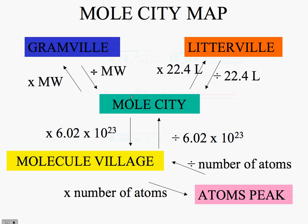To go from Gramsville to Mole City, we simply divide by the molecular weight or atomic weight of the substance, and our answer is in moles. To go from moles to Molecule Village, we multiply by 6.02 times 10 to the 23rd, which is Avogadro's number, giving our answer in molecules. To go from molecules to atoms, we multiply by the number of atoms, and our answer is in atoms.